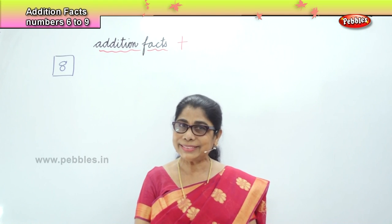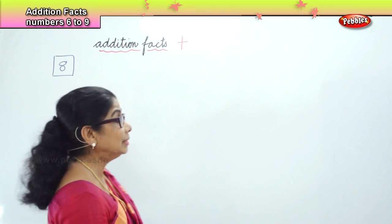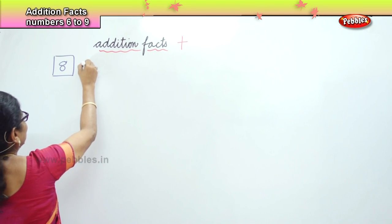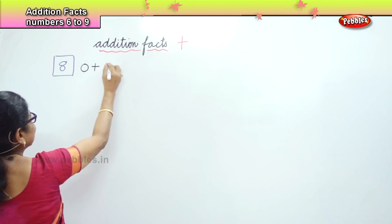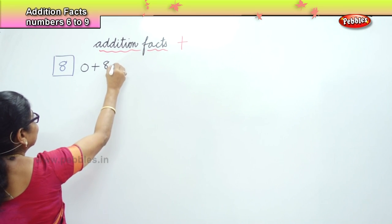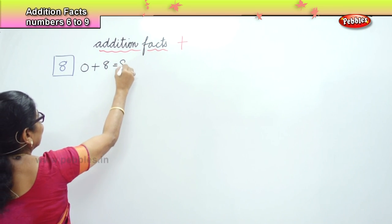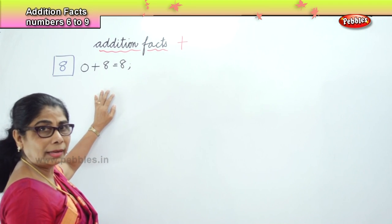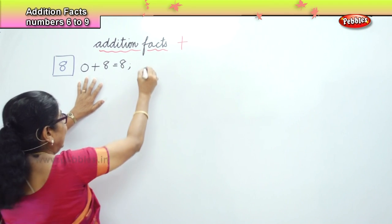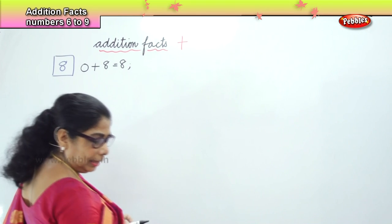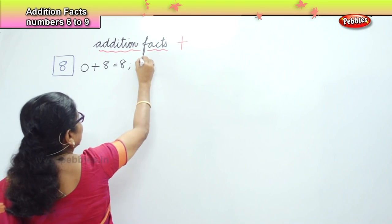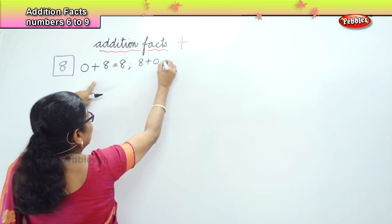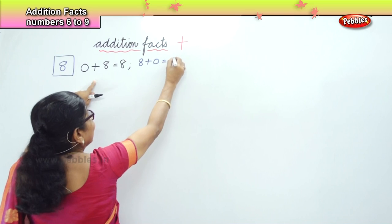We begin with 0 plus 8. Here we have 0 plus 8 equal to 8. And the reverse: 8 plus 0 is also 8.